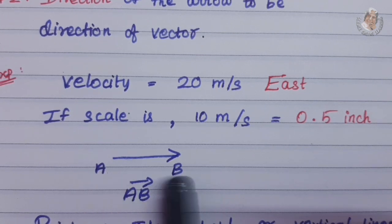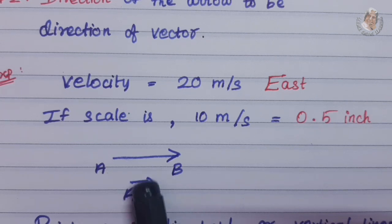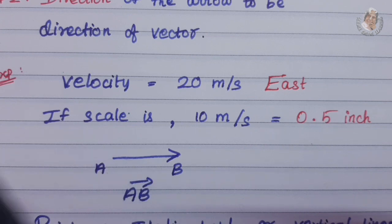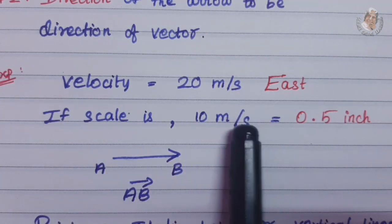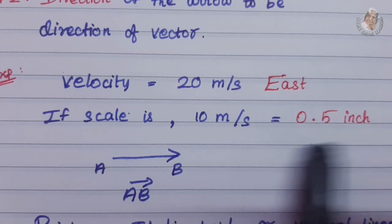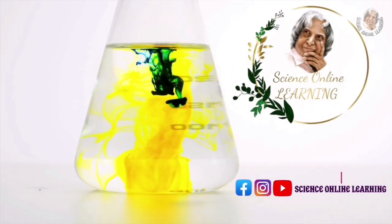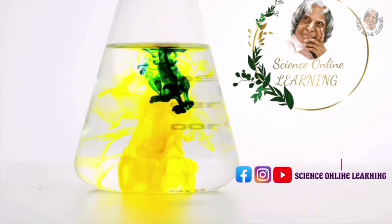East side. This is the length, this is the magnitude. This scale is 10 meters per second equals 0.5 inches.